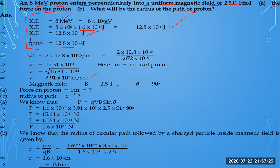Now we calculate the force on the proton. The magnetic field strength is 2.5 Tesla, and the proton enters perpendicularly at 90 degrees. The formula we already discussed is F = QVB sinθ. The charge value is known, the speed has been calculated, the value of B is given, and the angle is given.